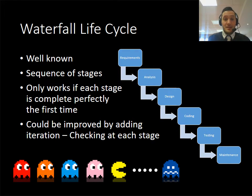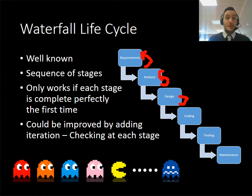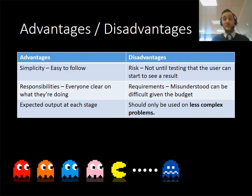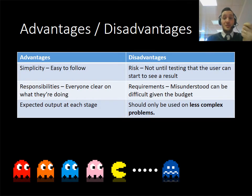This can be improved by adding iteration. Instead of finishing your requirements and moving straight on, you could go back and see if there's a way of improving that set of requirements before moving to analysis. During analysis you could loop back again, and the same with design. Adding iteration makes it more reflective and the project will be a lot stronger. The advantages of waterfall are that it's simple and easy to follow — you go from one step to the next — and everybody can be responsible for a specific task. There is also expected output at each stage, so in order to move on you need to show documentation that something is finished.